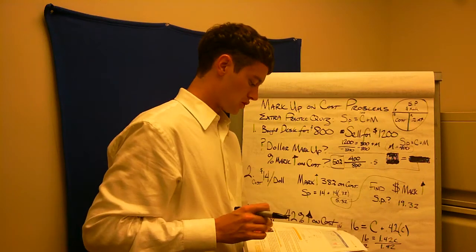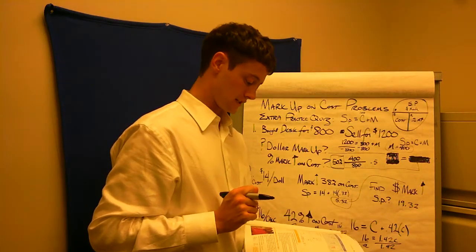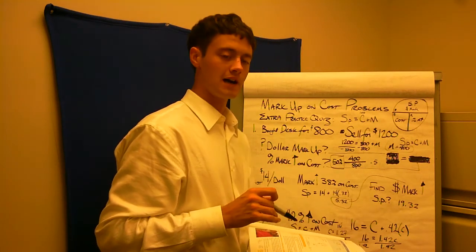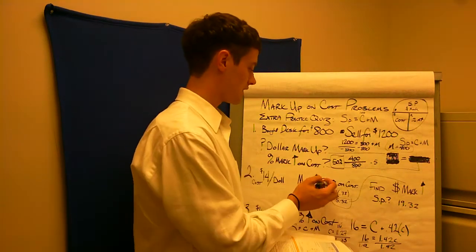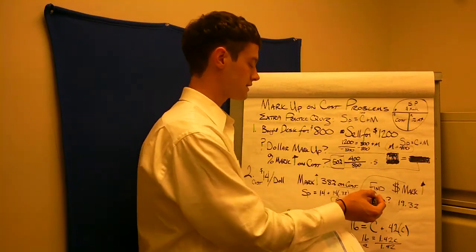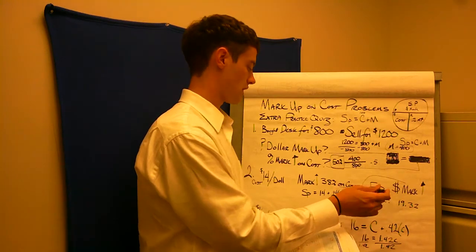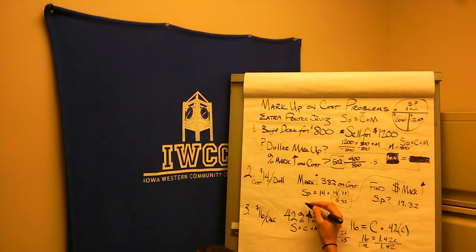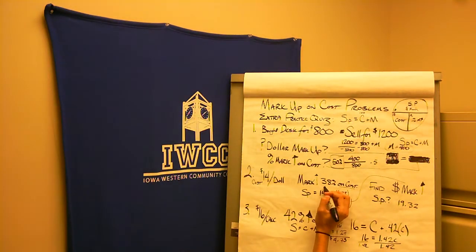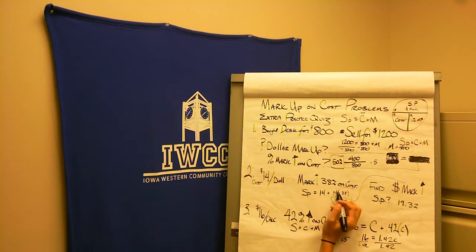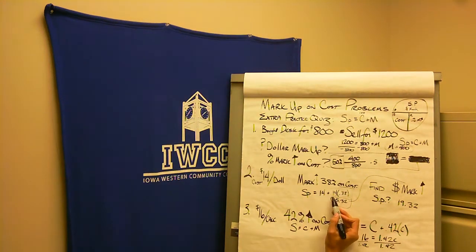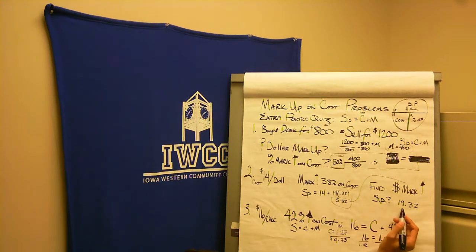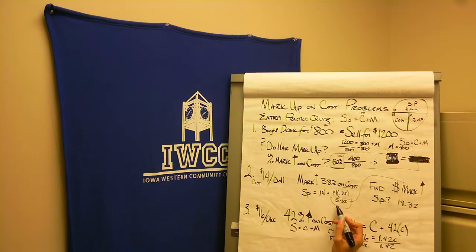Now, the second problem is Suki bought dolls for $14 each. That's what the cost is. To make up her profit that she desires, she has to markup each doll 38% on cost. So it asks us to find the dollar markup as well as the selling price. So I use my formula. My selling price equals my cost, which is $14, plus my markup. And we're informed that 38% of my cost plus my 14. So I've got to multiply these two together. So when I do that, I get $5.32. So my selling price is $14 plus $5.32. So my selling price is $19.32. And my markup is $5.32.